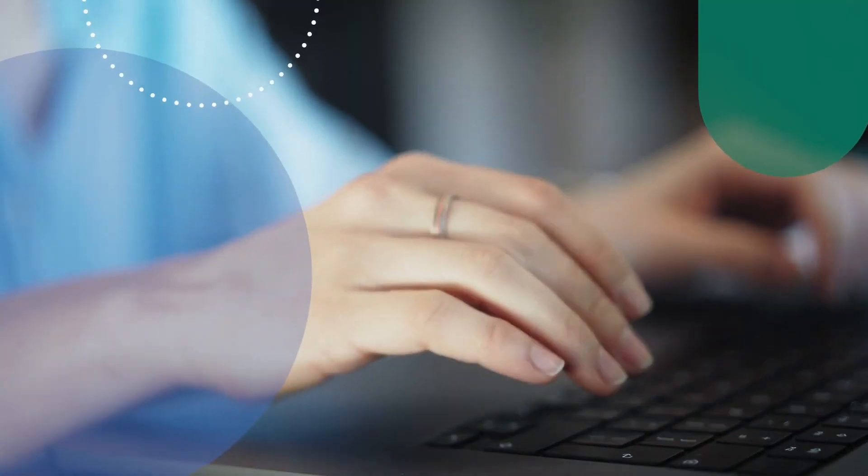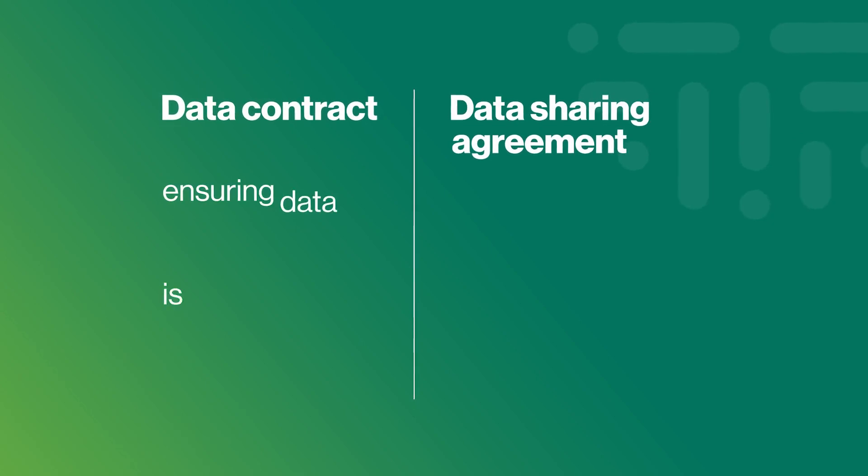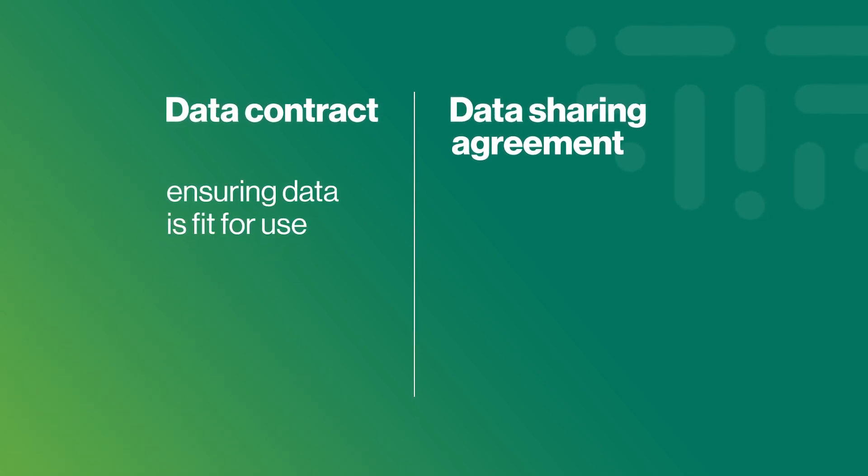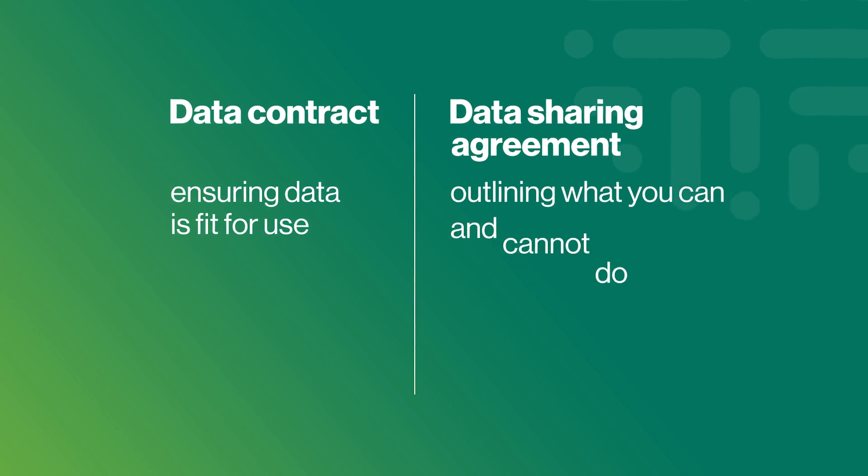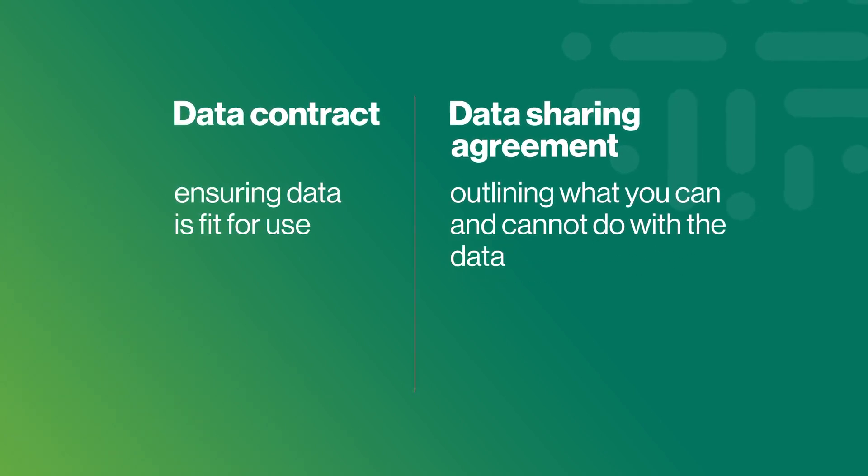Understanding this clearly marks the difference between a data contract on the one hand, where the main purpose is to ensure that the data is fit for use for the data use case, and a data sharing agreement on the other hand, where the purpose is to outline what you can and cannot do with the data. Together, they form a nice union where the data contract is the offense line to make sure you get value from the data, and the data sharing agreement is the defense line to protect users from misusing the data and all the consequences that may bring.